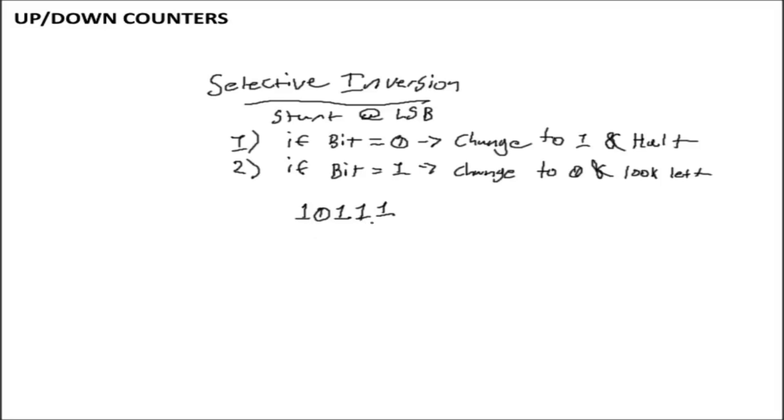However, if I have a sequence that looks something like this, where we have a zero somewhere in the middle of the number followed by a sequence of ones all the way to the least significant bit, then we get to see the full power of this algorithm. We start at the least significant bit. Since it's one, we change it to zero and then look left. So that now becomes zero and we look at the next bit to the left. It's also one, so we do the same thing. That's also one, so we do the same thing.